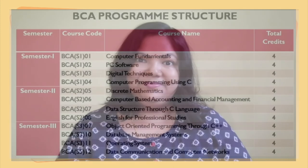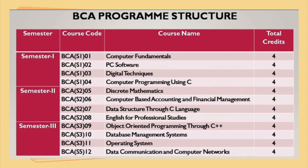Let us look at the different courses in the various semesters of the BCA program. Each semester consists of four courses except in the sixth semester. The first semester consists of courses like computer fundamentals, PC software, digital techniques, and computer programming using C. The second semester consists of courses like discrete mathematics, computer based accounting and financial management, data structure through C language, and English for professional studies.